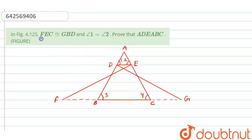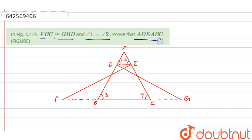We are given that triangle FEC is congruent to triangle ZBD, and we are also given that angle 1 equals angle 2. We need to prove that triangle ADE is similar to triangle ABC.